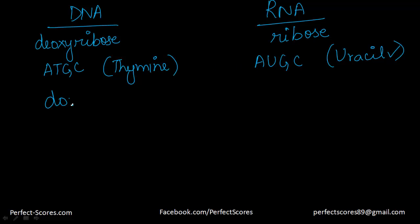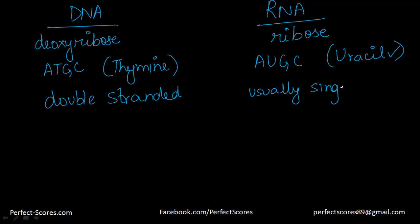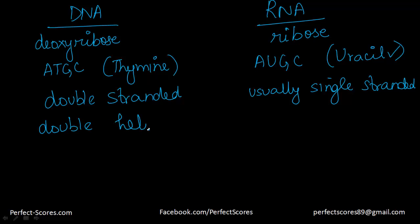DNA is double-stranded, so two strands wind together to form a double helix. RNA is usually single-stranded. DNA is always double-stranded and always forms a double helix, whereas RNA does not form a double helix.